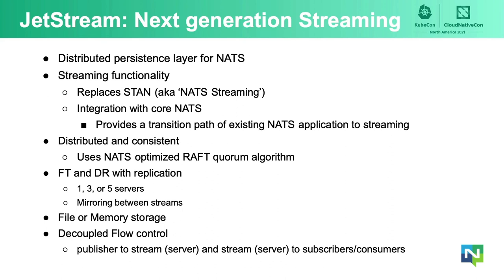JetStream takes lessons learned from STAN and is a brand new implementation offering many advantages. It provides much better integration with Core NATS, allowing a transition path for existing Core NATS applications to streaming. JetStream is distributed and consistent, using a NATS-optimized Raft quorum algorithm that is much faster and requires no configuration compared to, for example, a Paxos-based quorum algorithm. You can create JetStream clusters of one, three, or five servers depending on whether you need no fault tolerance or want to survive one or two servers going down simultaneously.